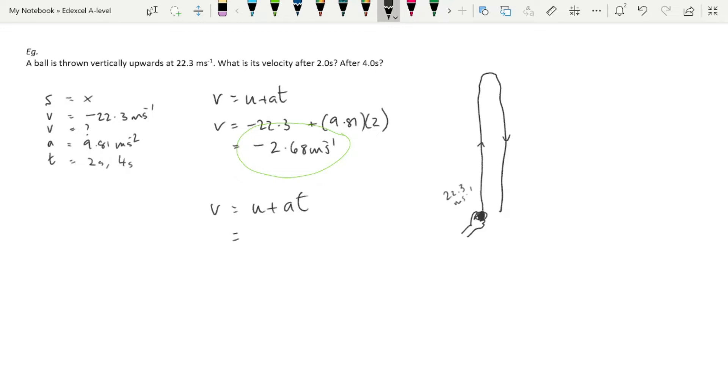For 4 seconds, we have minus 22.3 plus 9.81 times 4. If you do the calculation, you'll see we get plus 16.94 meters per second.